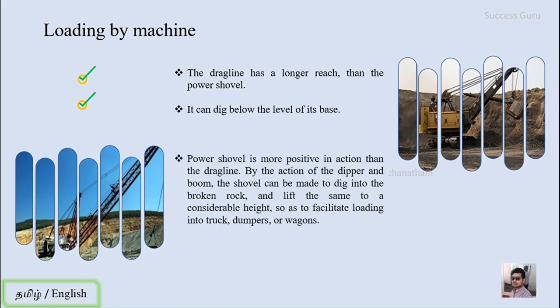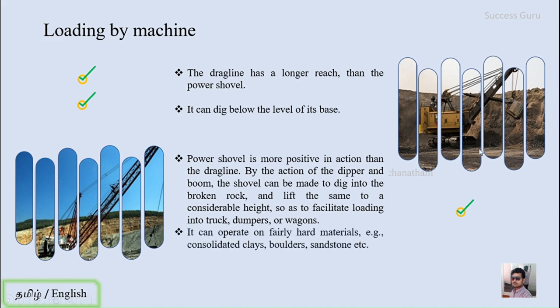On the other hand, the power shovel is more positive in active action than the drag line. By action of the dipper and boom, the shovel can be made to dig into broken rock and lift material to considerable height, facilitating loading into trucks, dumpers, or wagons — this is a major advantage of the power shovel since the drag line cannot lift material to much height. Additionally, the power shovel can operate on fairly hard material such as boulders and sandstone, whereas the drag line works mainly on broken rock debris.